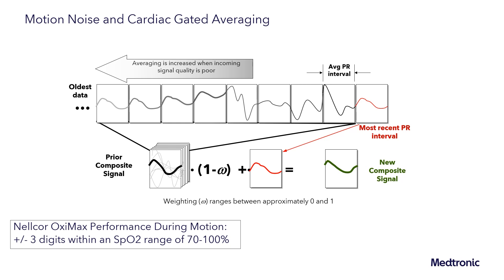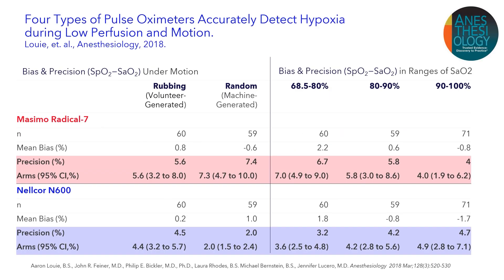That composite signal, because it averages these prior signals, can scrub out that noise and decrease it such that the new composite signal — built up from the prior signals — is reflective of that true patient pulse. Utilizing this method of cardiac gated averaging, again putting an emphasis on the pulse from the patient, and able to scrub out that noise, Nelcor is able to achieve motion performance of plus or minus three digits from that SpO2 range of 70 to 100%. We can see this play out in the literature. Here is a study looking at various pulse oximeters and their performance under both low perfusion and motion — a challenging situation for the pulse oximeter to work under. All of the system has to work in unison here to be able to achieve that performance.